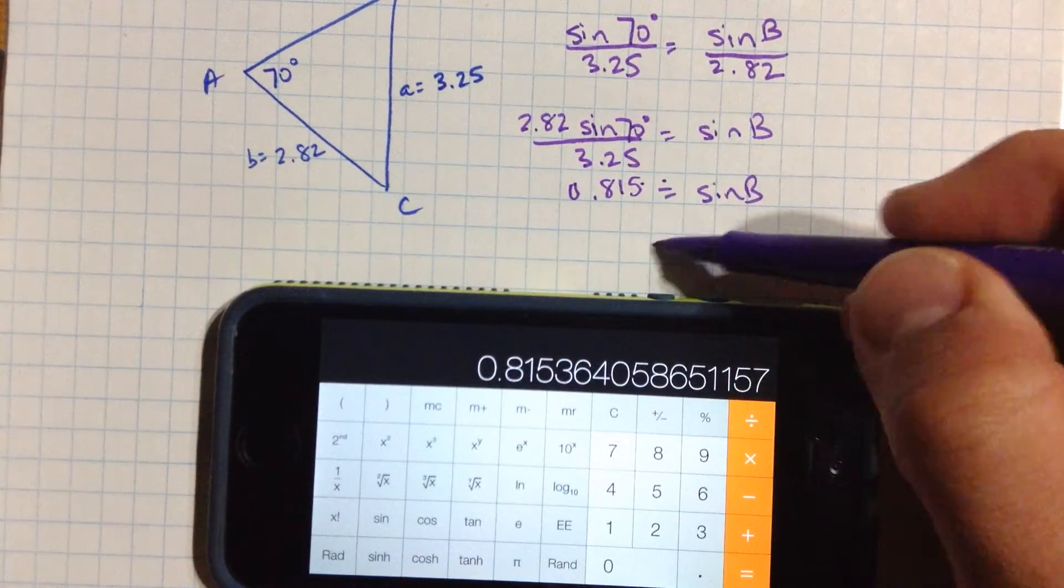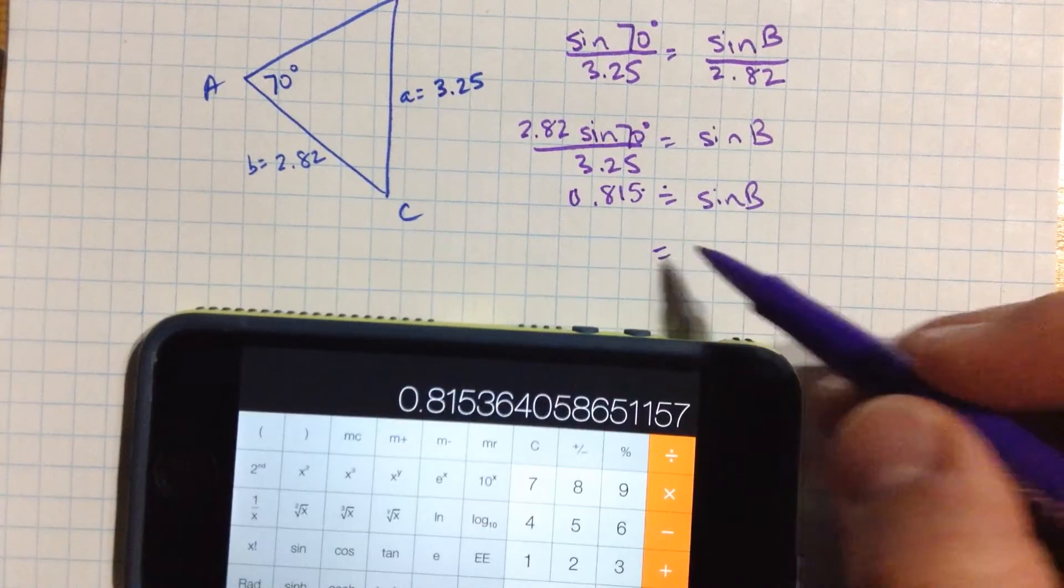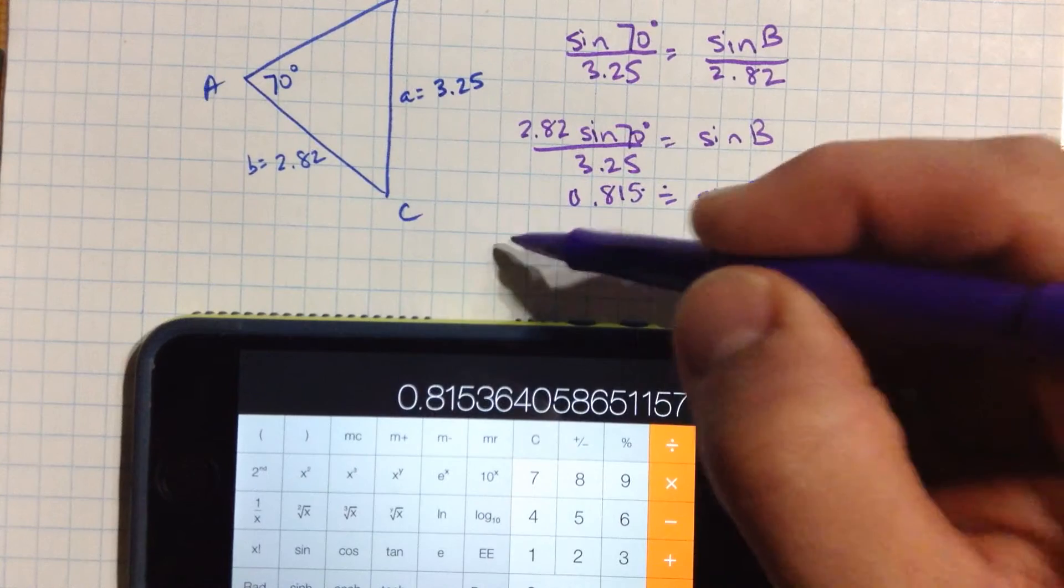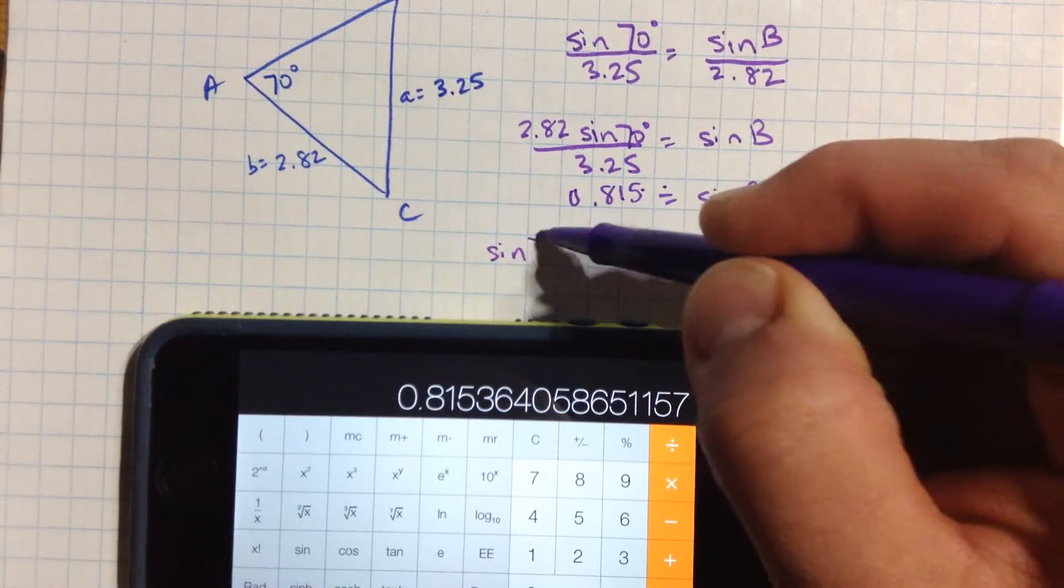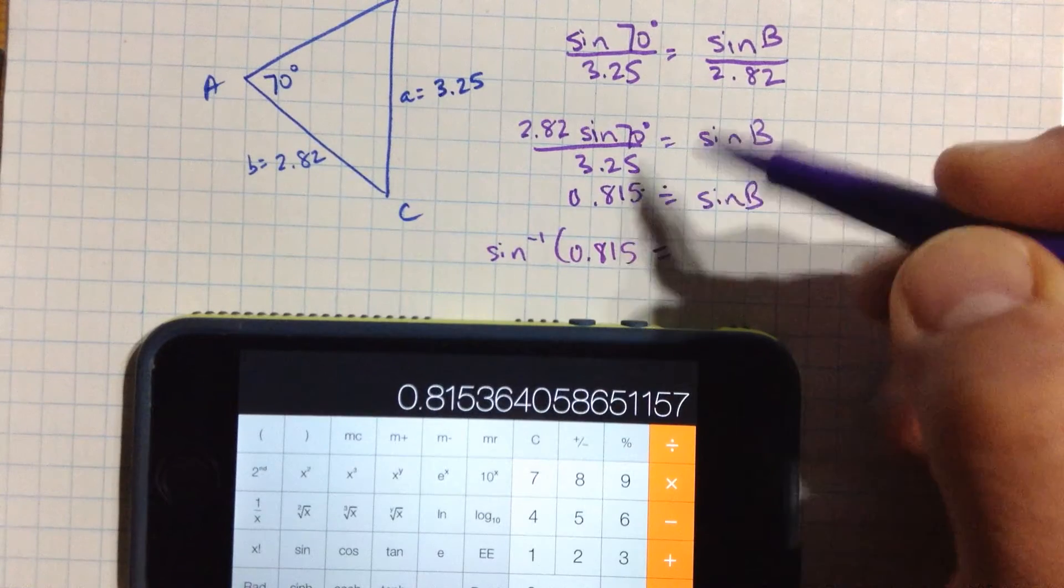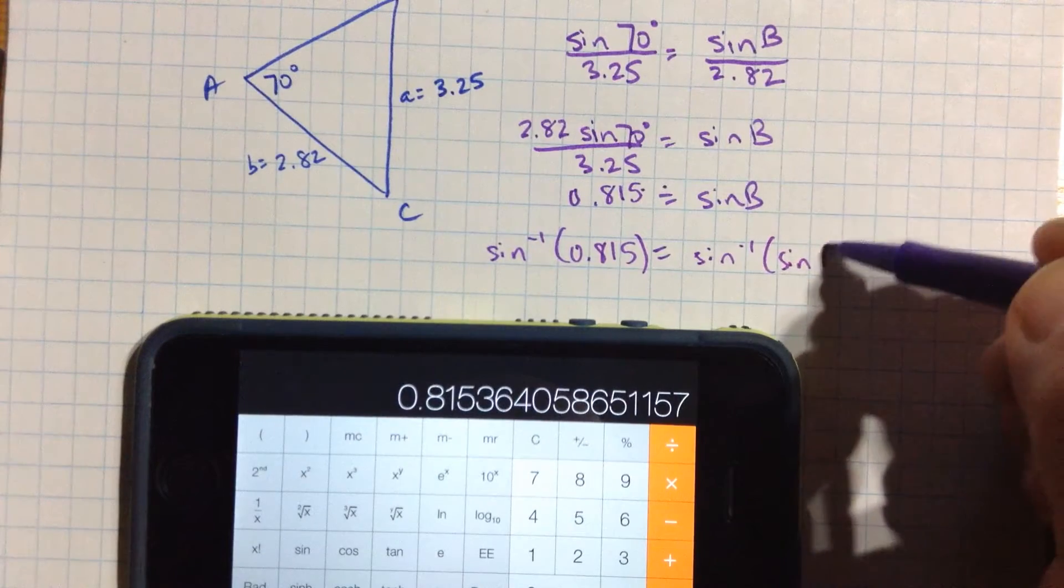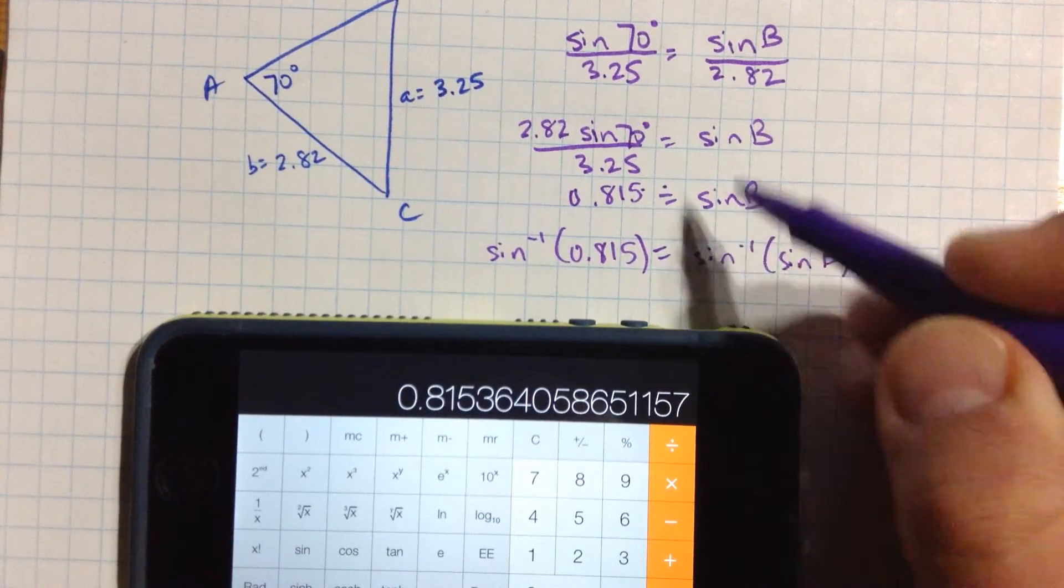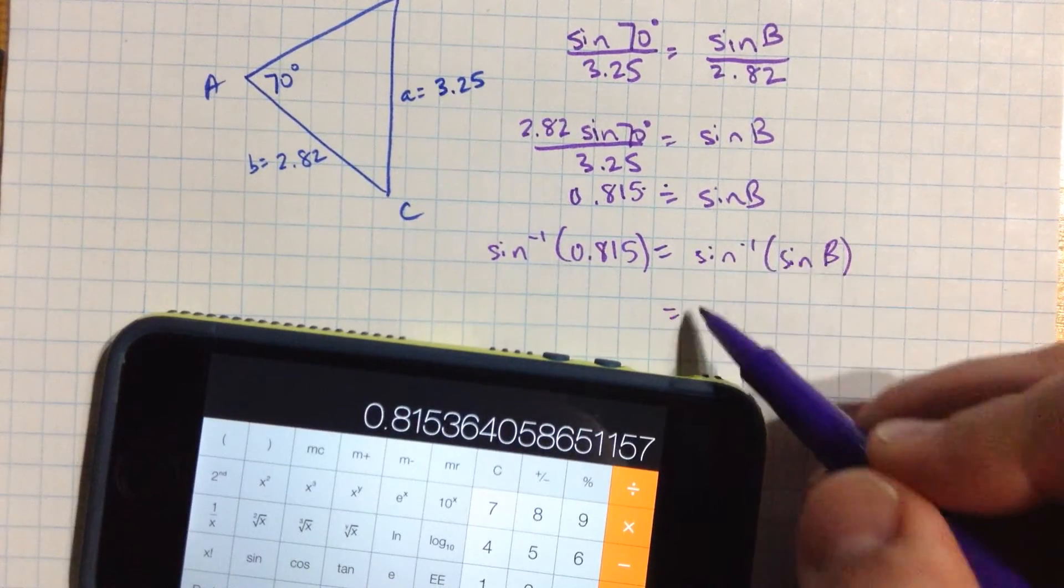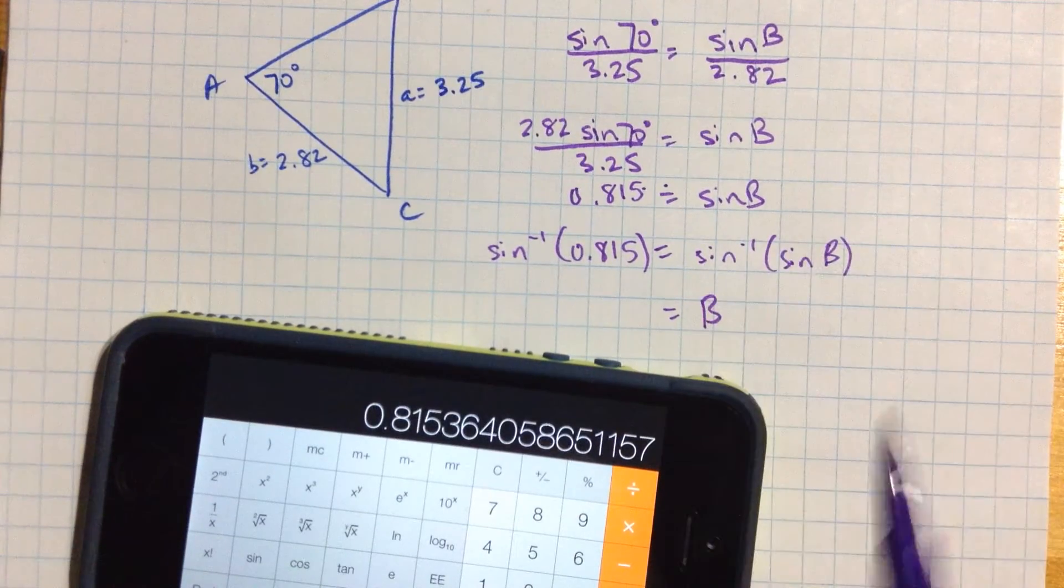And now how do I find out what value we need for b? Well I'm going to take the sine inverse of both sides. Sine inverse of 0.815 is the sine inverse of the sine of b, which is a weird way of just saying b. You sort of take the sine and then you undo the sine.